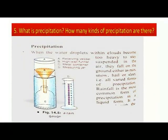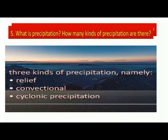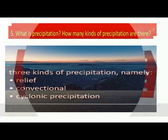Question 5. What is precipitation? How many conditions of precipitation are there? When the water droplets within clouds become too heavy to stay suspended in the air, they fall on the ground either as rain, snow, hail, or sleet. Rainfall is the most common form of precipitation in liquid form. The three kinds of precipitation are relief precipitation, conventional precipitation, and cyclonic precipitation.